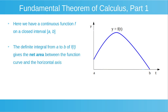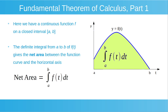The definite integral from a to b of our function f gives the net area between the function curve and the horizontal axis. We can calculate the net area as being equal to the integral from a to b of f dt. Looking at our plot on the right-hand side of the screen, we can calculate that area shaded in green between the function curve and the horizontal axis as being equal to the integral from a to b of f dt.